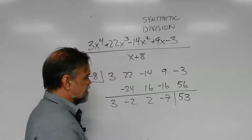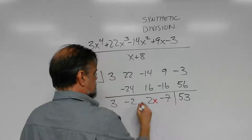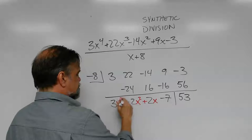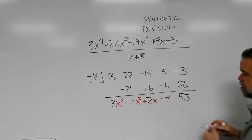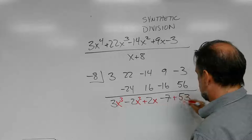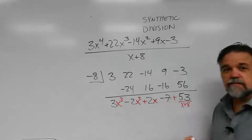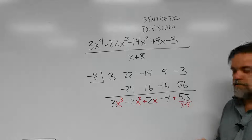Because now you just say, these are my constants. This is my x. This is my x squared. I'll put a plus there. This is my x cubed. And now I'm just going to change that 53 to plus 53 over x plus 8. And that's my answer. It's that easy. You want one more, don't you?